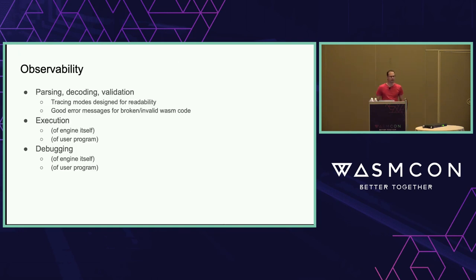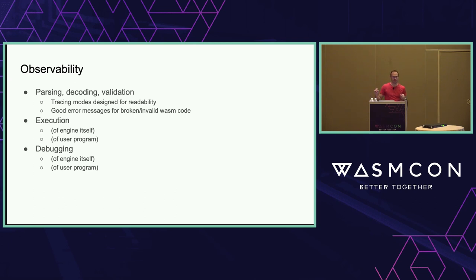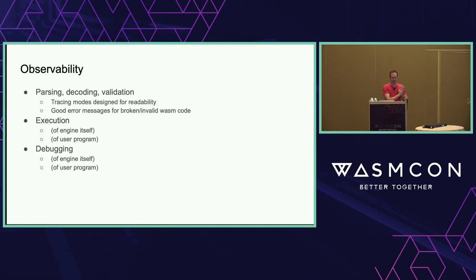What does observability mean? Compilers produce bad code — when you're developing a new compiler feature from scratch, it's broken and the engine is going to choke on it. Having nice tracing modes that show you what the engine is doing in a readable format as it parses and type-checks the code is extremely valuable to any compiler writer. There are lots of tracing modes you can turn on, and I worked hard on decent error messages — not just 'bad binary,' but 'this byte is wrong, I was expecting this type,' going in a Rust-style direction.